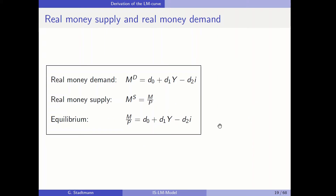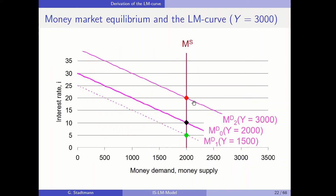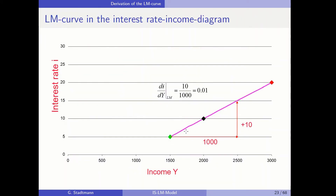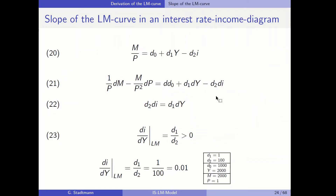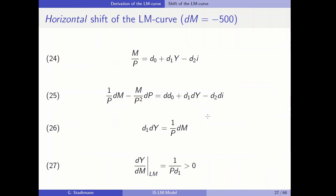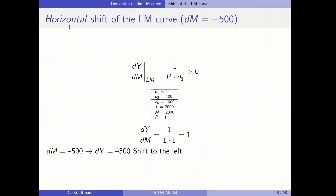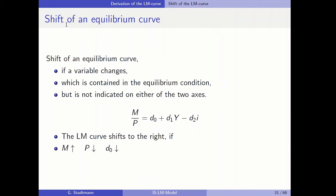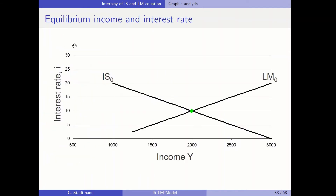We'll start at the equilibrium condition, then look at different scenarios and derive our first LM curve. We'll discuss the slope and derive it formally as well. Then we'll talk about shifts of the LM curve — once more in a horizontal context and in a vertical context. In the end, we will be able to derive the full IS-LM relationship in the interest rate-income diagram.